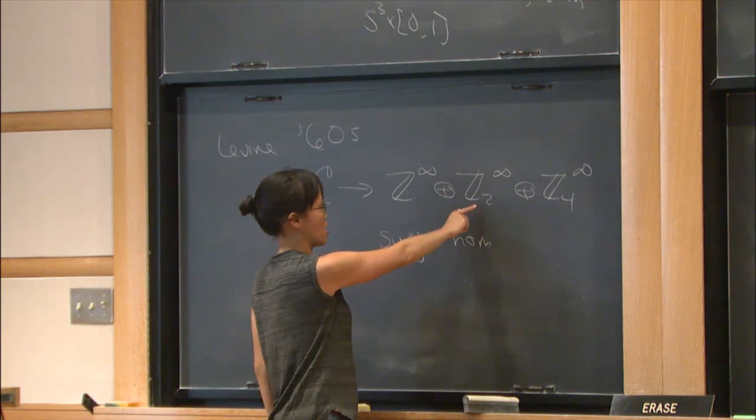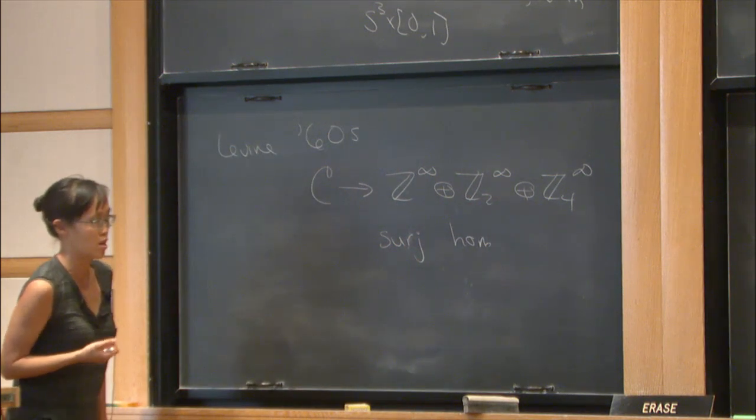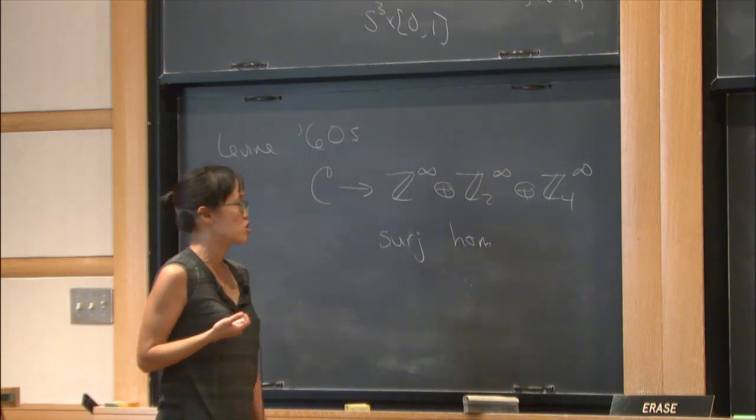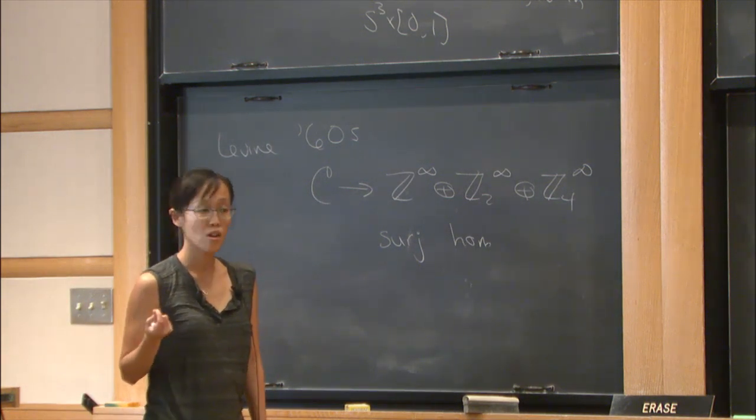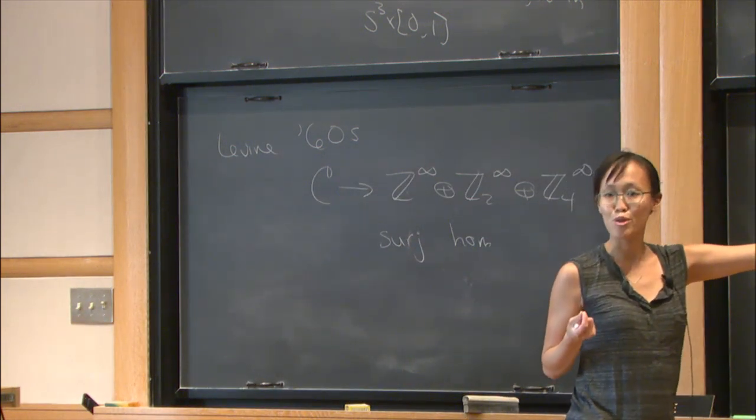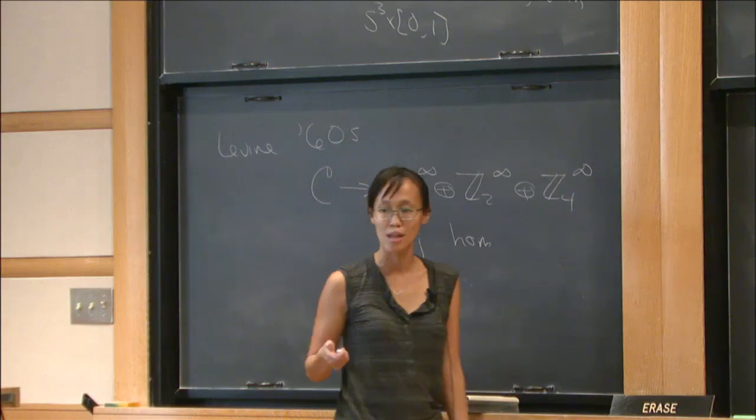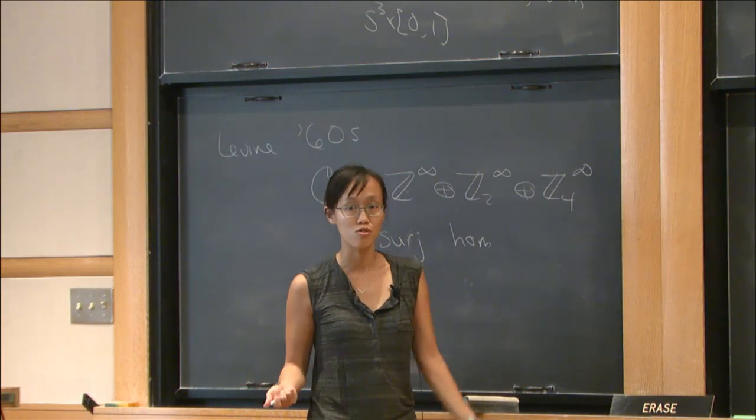It turns out the only known torsion in the concordance group is of order 2. If you think about what the inverse of an element was, you could say, well, if you have a knot that is isotopic to the reverse of the mirror image, that's going to be order 2 in the concordance group.